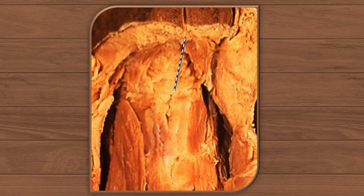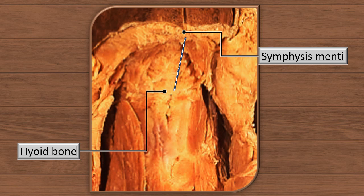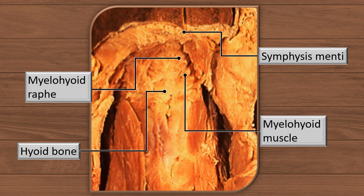Here is the same photograph, slightly enlarged with improved contrast. Let's recap: symphysis menti, the flashing dotted line is the raphe mentioned earlier, lower down the hyoid bone, that's the mylohyoid raphe shown by the flashing dashed line, and the mylohyoid muscle.